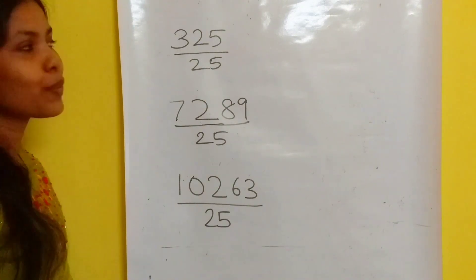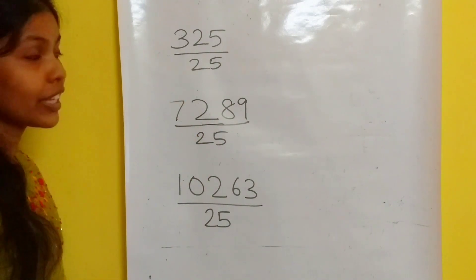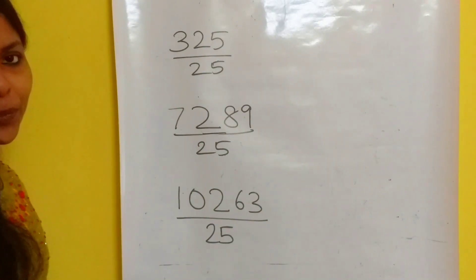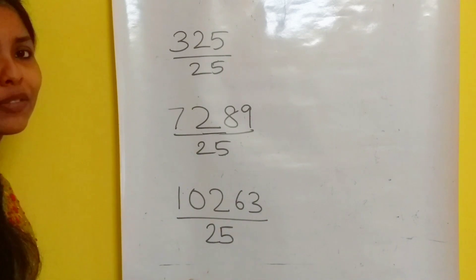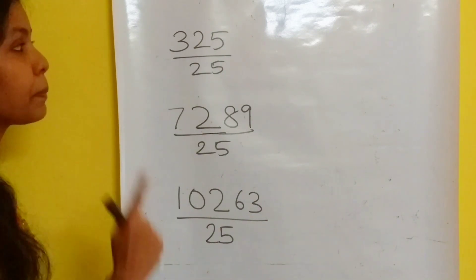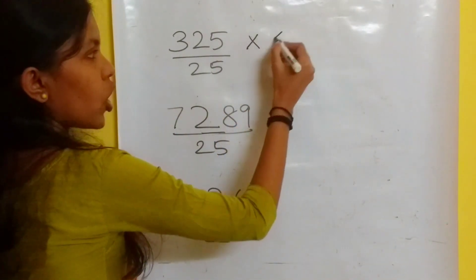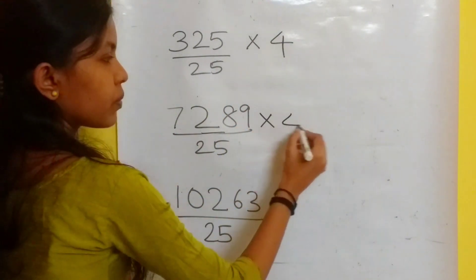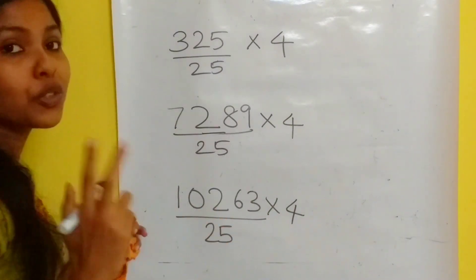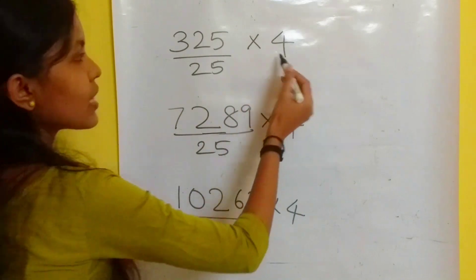In the previous section, we divided all numbers by 5. Now I am going to divide all these numbers by 25. Here also, you just have to follow two steps. First step is to multiply all the numbers by 4. In the second step, there should be two digits after the decimal point.